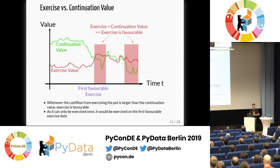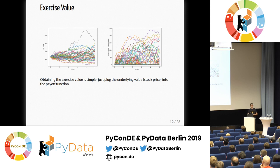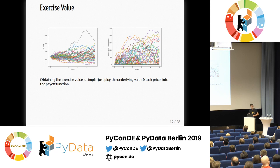These two values have to be computed. One is easy, one is hard. Exercise value is very simple — you just plug the simulated model paths into the payoff function: maximum of (680 minus x) and zero. There you plug in the simulated values and get the result. The continuation value, however, is not simple. There are several approaches to that — I will show you two which don't work.